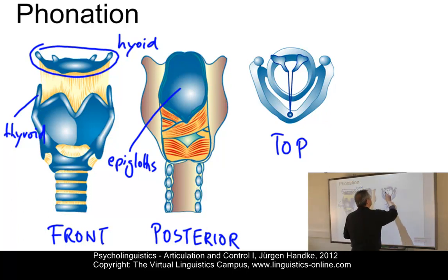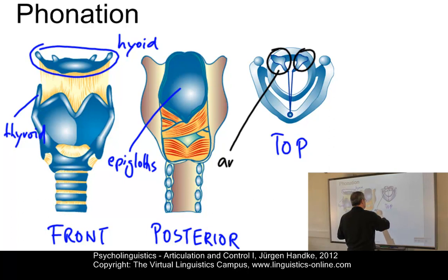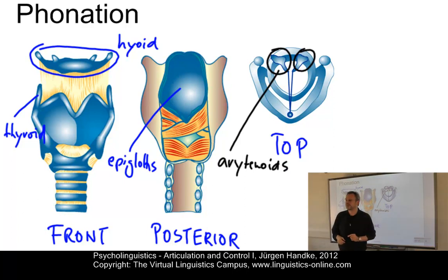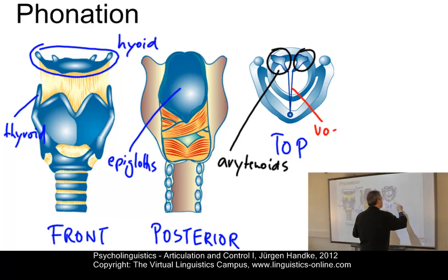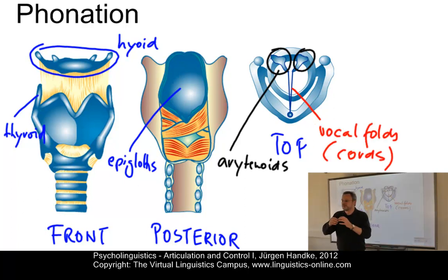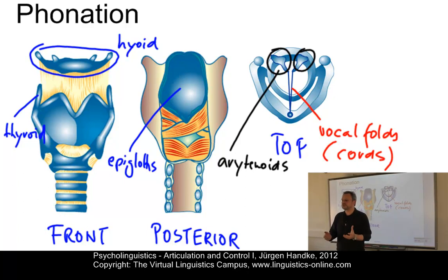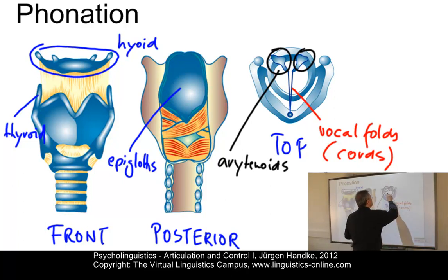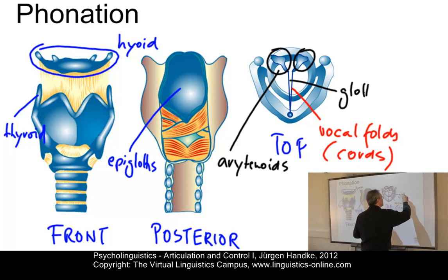Quite important are the arytenoids, or arytenoid cartilages. They are connected to the vocal folds, which you can see here. These are the vocal folds, also referred to as vocal chords. The movement of the arytenoids has a direct influence on the tension of the vocal chords. The vocal chords themselves constitute the basic sound sources of speech. And the gap between them is referred to as the glottis.